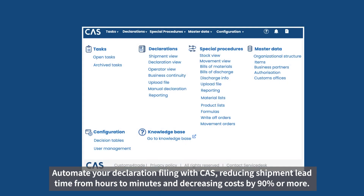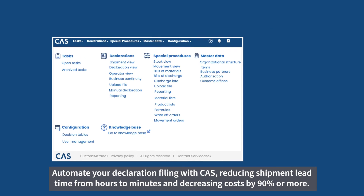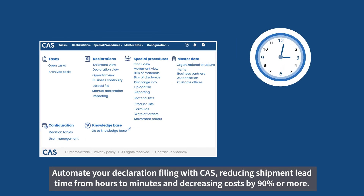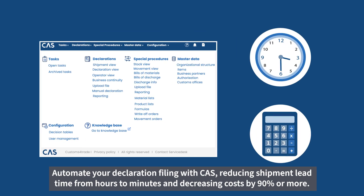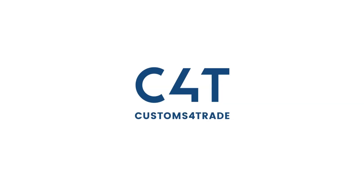Automate your declaration filing with CAST, reducing shipment lead time from hours to minutes, and decreasing cost by 90% or more.